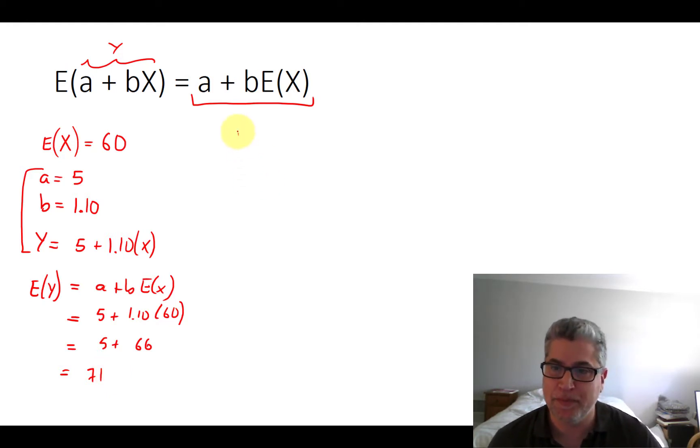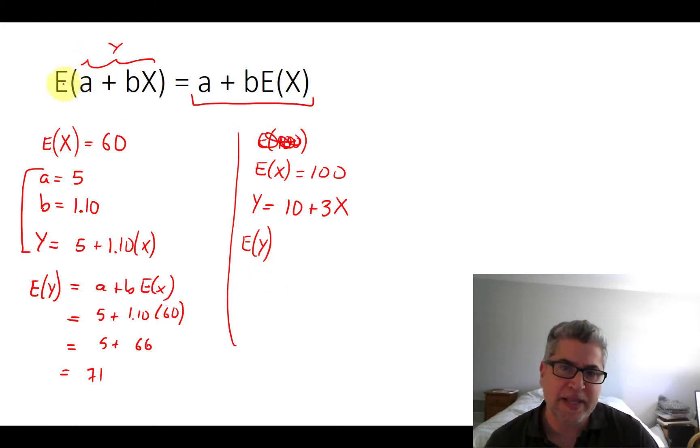This would be a way for your professor or your teacher to increase the test scores. You can easily calculate what the new average would be just by applying this formula. Your professor could play around with all kinds of different combinations of a and b to yield a particular new average. There's all kinds of different combinations of a and b that would switch 60 over to 71. And those will affect the variance, and that's going to be the next video we're going to look at.